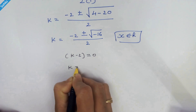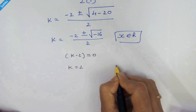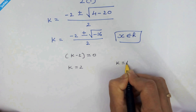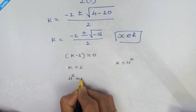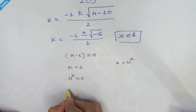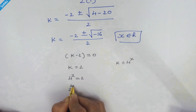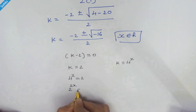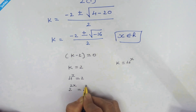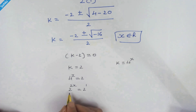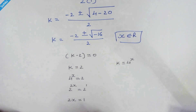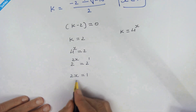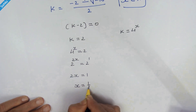So we have k equal to 2. Now k was taken as 4 raised to x, so 4 raised to x is equal to 2. We can write 4 as 2 squared, so 2 raised to 2x equals 2 raised to 1, since 1 is the default exponent. We have the same base on both sides, so we can equate the exponents: 2x equals 1, therefore x equals 1 over 2.